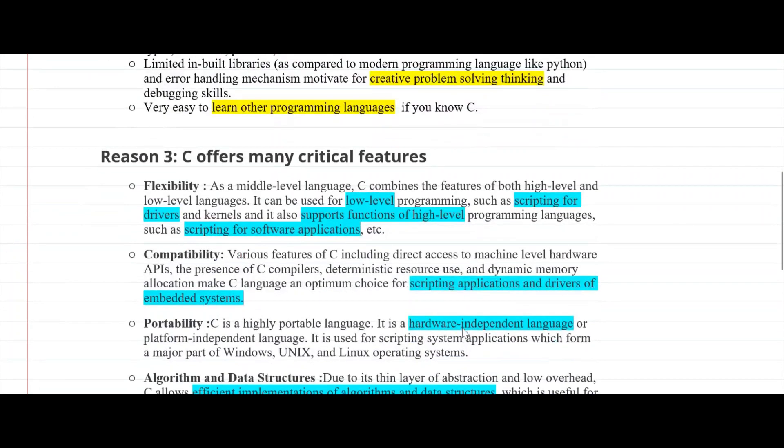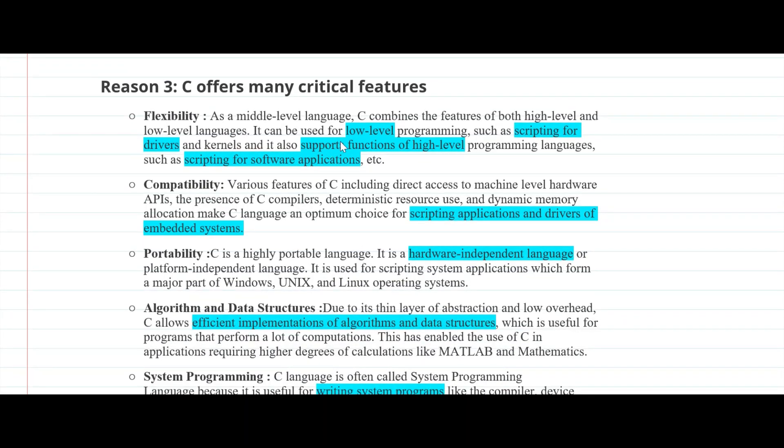My third reason is C offers many critical features. Since C is a middle level language, it combines features of both high level as well as low level. You can write drivers in C and you can also write software applications in C. And since C can deal with machine level hardware directly, it has features corresponding to deterministic resource usage and dynamic memory allocation.